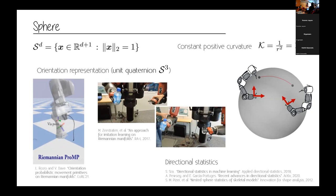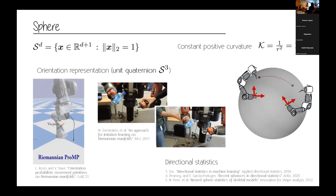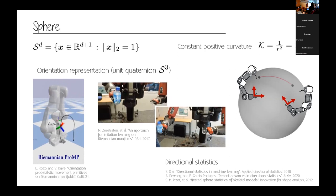Another manifold of interest is the sphere, which besides robotics is very commonly used in directional statistics. For example, there are shape features for images or 3D meshes that are encoded using unit vectors in higher-dimensional spaces.